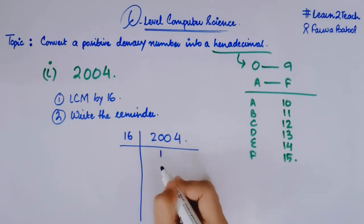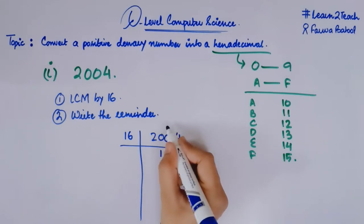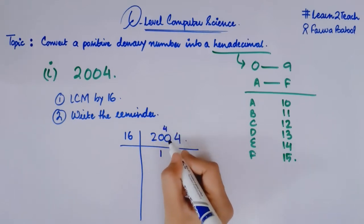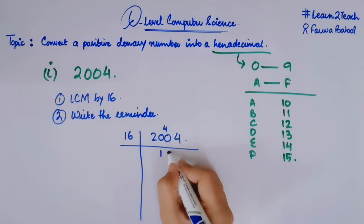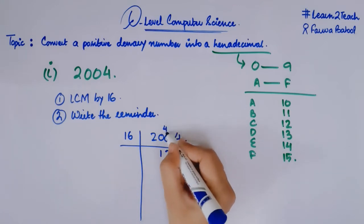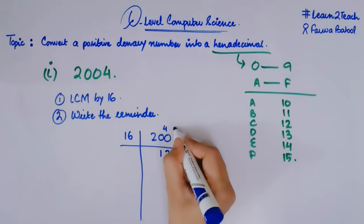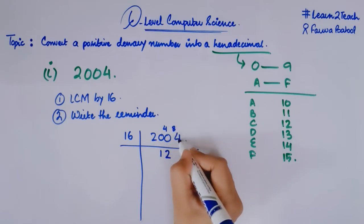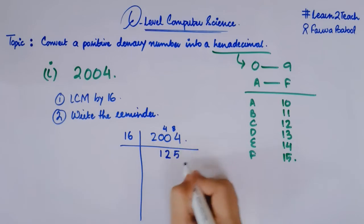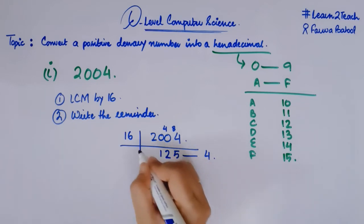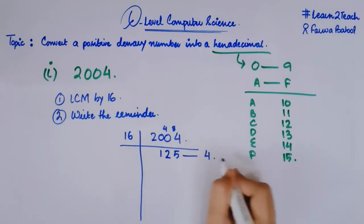I have the number 2004. Let me take LCM by 16. 16, 1 is a 16. This is 20. 20 minus 16 would be 4. This 4 would be a carry to this. Then 16, 2 is a 32. This is 40. 40 minus 32 would be 8. This 8 would be a carry to this. This is 84. Then 16, 5 is a 80 and 80 minus 84 would be 4. So what is the remainder over here? I have a 4 remainder. So this is my first answer for the LCM.